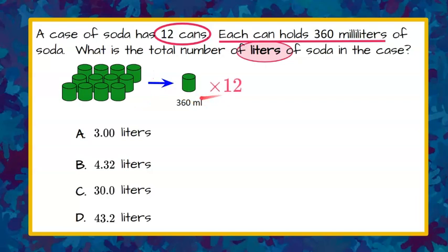So the first thing I'm going to do is multiply 360 by 12. And that will tell me the total number of milliliters in the case. So let's go ahead and set this up. 360 multiplied by 12.